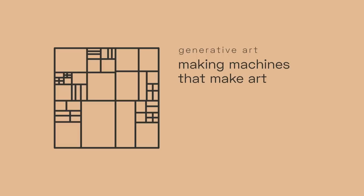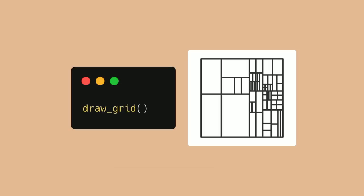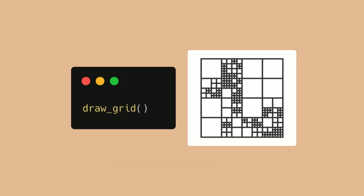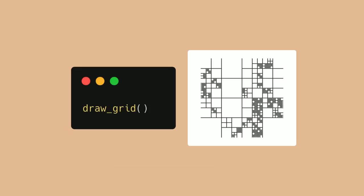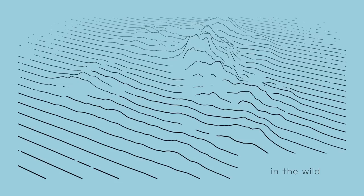When I say generative art, I'm talking about making a machine that actually makes art — creating an autonomous system that every time it runs it produces a new artwork or a new image. Here's that same simple example but using a generative function: every time it runs it produces a different image. Every time it runs, you just get a different image, a different artwork.